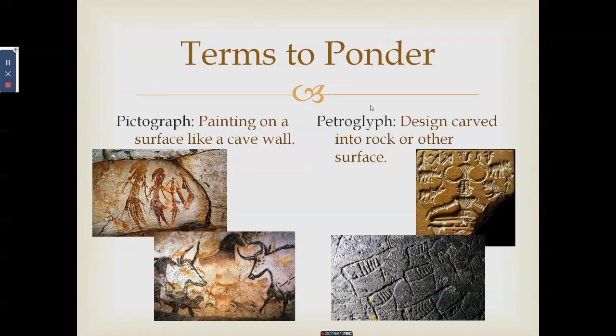Two important terms to know are pictograph and petroglyph. A pictograph is a painting on a surface like a cave wall — it uses pigments. A petroglyph is a design carved or engraved into rock or another surface. So pictograph means something painted, and petroglyph means something carved or engraved.